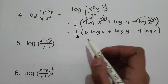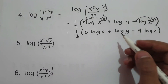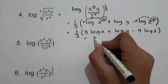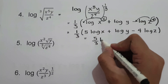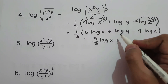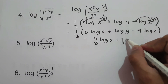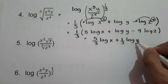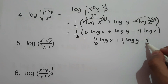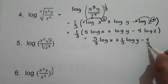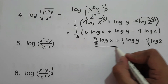If you want to simplify your answer, distribute 1/3 on each term of the logarithm. 1/3 times 5 gives 5/3, so we have 5/3 log x, plus 1/3 log y, minus 4/3 log z. So this will be our final answer.